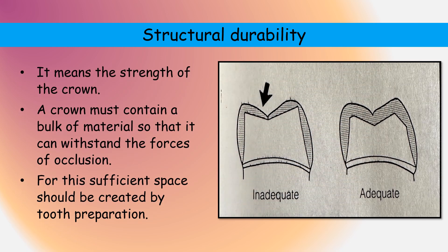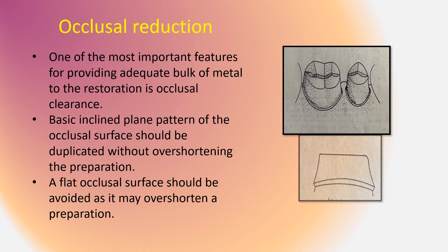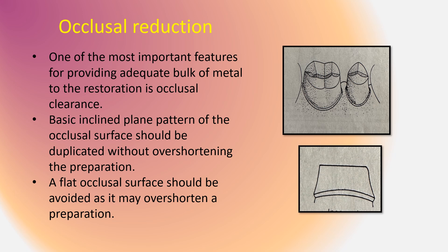Coming to the next principle of tooth preparation: structural durability. A restoration must contain a bulk of material that is adequate to withstand the forces of occlusion. In the first picture the tooth preparation is insufficient, making the crown thin and unable to withstand occlusal forces. In the next picture, sufficient thickness of the crown is present due to proper tooth reduction. We must ensure the bulk of the restoration is confined to the space created by the tooth preparation, achieved through proper occlusal reduction, axial reduction, and creating a margin.